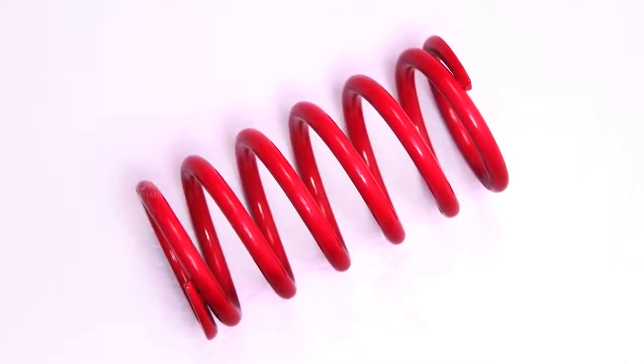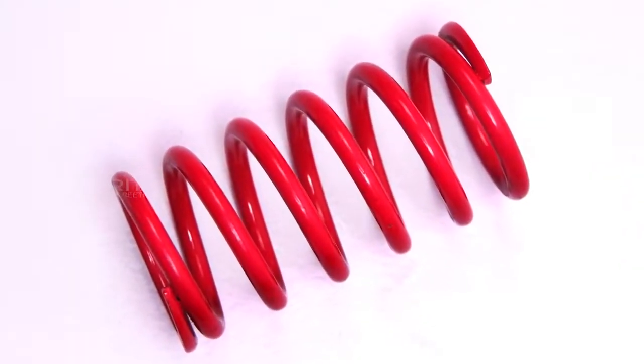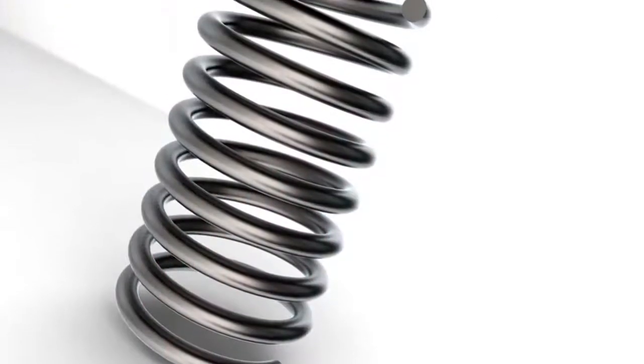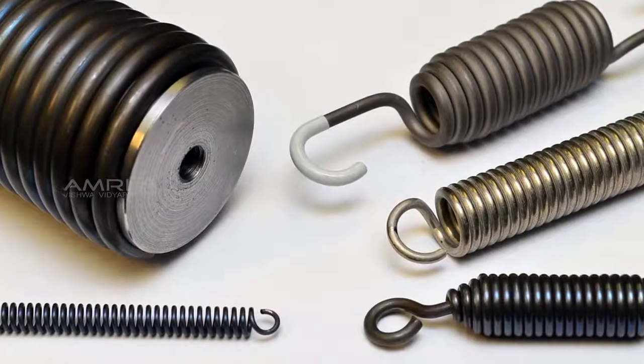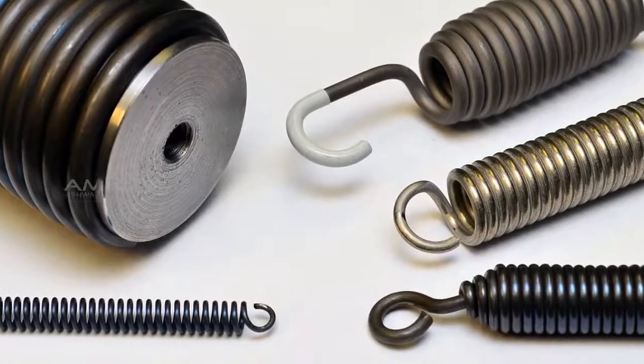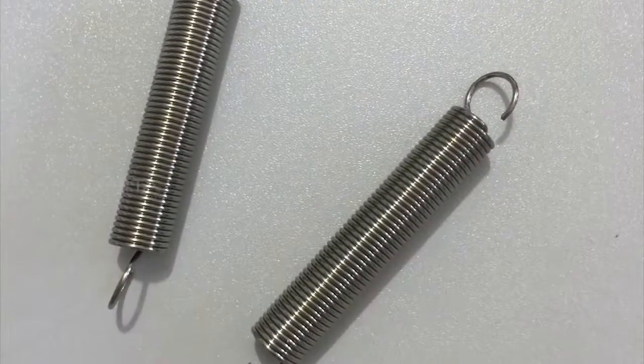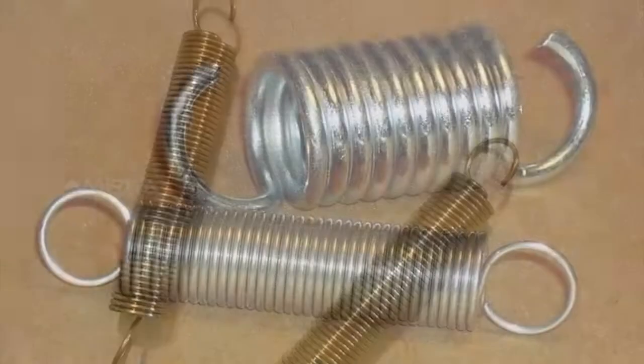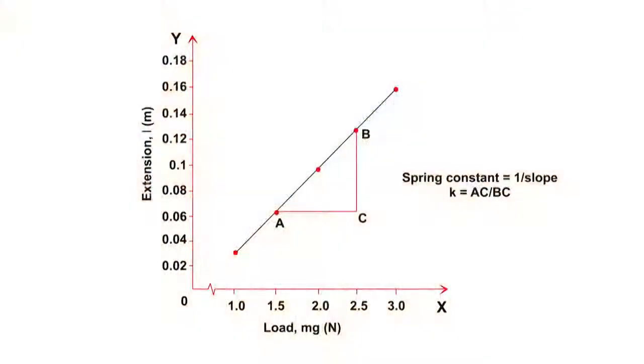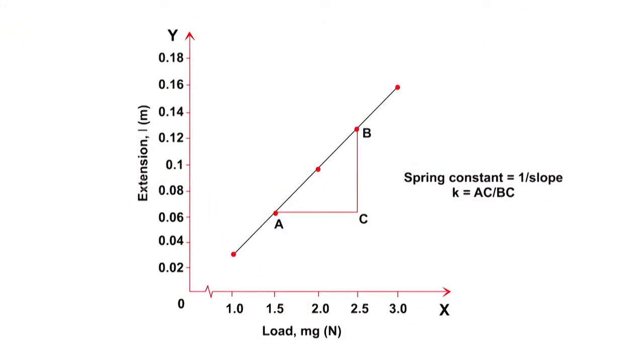Helical Spring. A helical spring is a wire coiled in the form of a helix whose function is to distort when loaded and to recover its original shape when the load is removed. Here, we are using this helical spring to find the force constant of the spring by plotting a graph between load and extension.